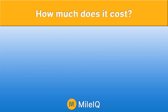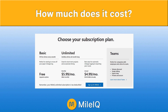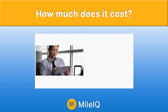The big question always is how much does it cost? With MileIQ, there are a couple of different ways to get it. One is with the basic subscription which doesn't cost anything, but you can only track up to 40 drives a month. The unlimited version costs $5.99 a month if you pay month by month, or roughly about $60 a year if you pay as a yearly subscription.